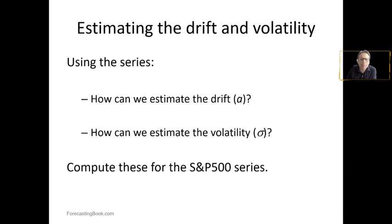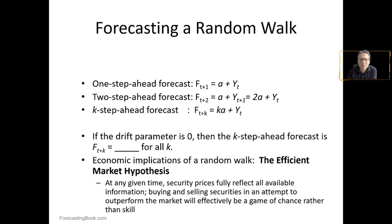We are going to estimate the drift and the volatility. We use the series and the question would be how can we estimate the drift a and how can we estimate the volatility sigma? We compute this for the Standard and Poor's series. For forecasting with a random walk, we use the observation in time t and the forecast will be in time t plus one plus the drift.